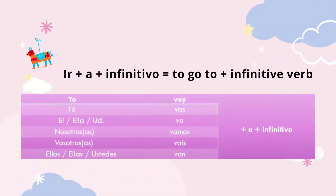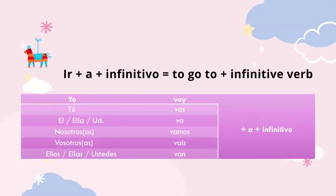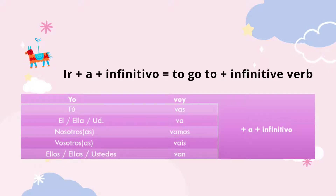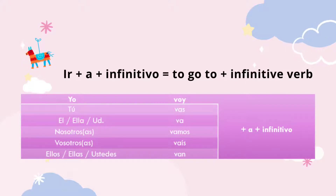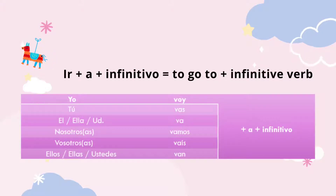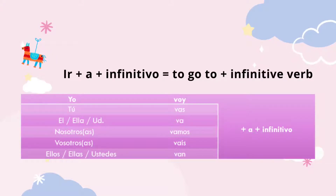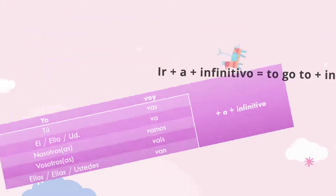The first thing we need to do is conjugate ir, which is the verb 'to go', into: voy, vas, va, vamos, vais, or van. Then we add 'a' and the infinitivo. The infinitivo is the base form of the verb that hasn't had any changes, such as comer, bailar, and estudiar.